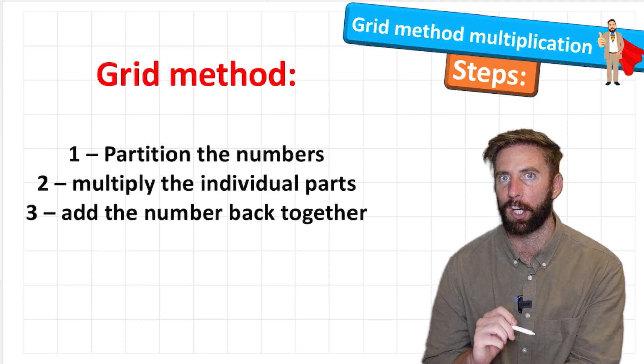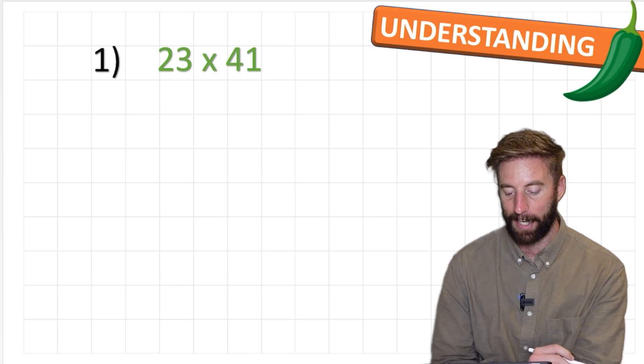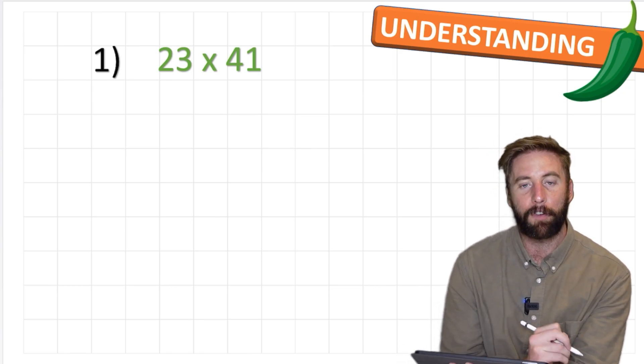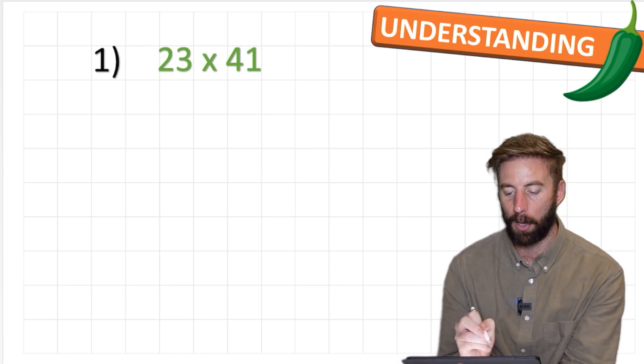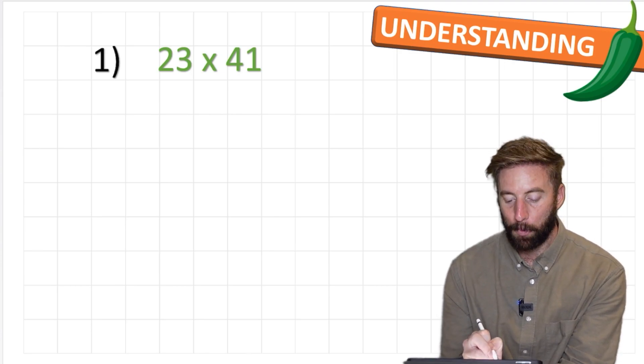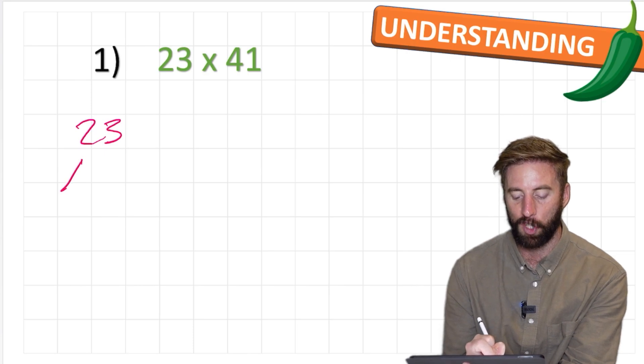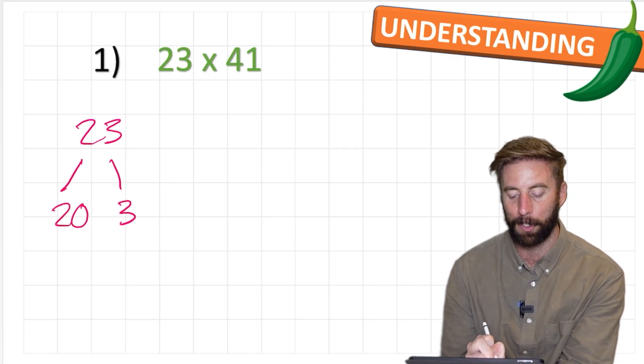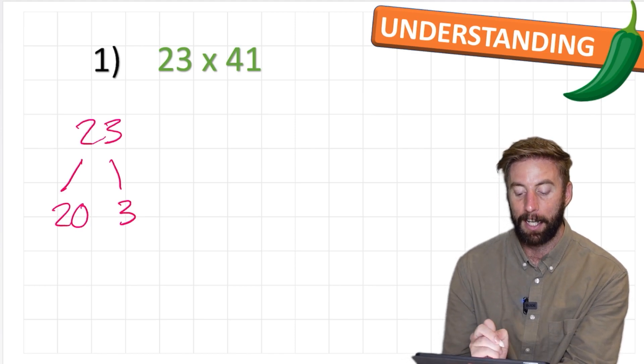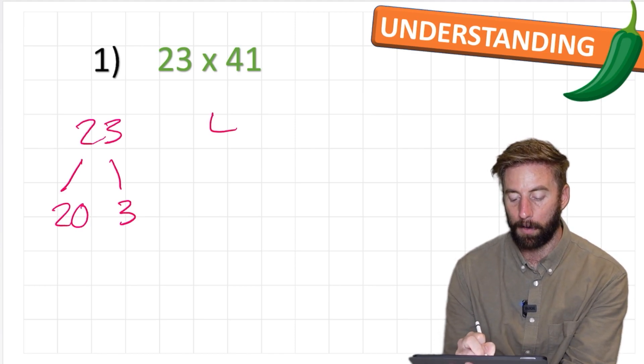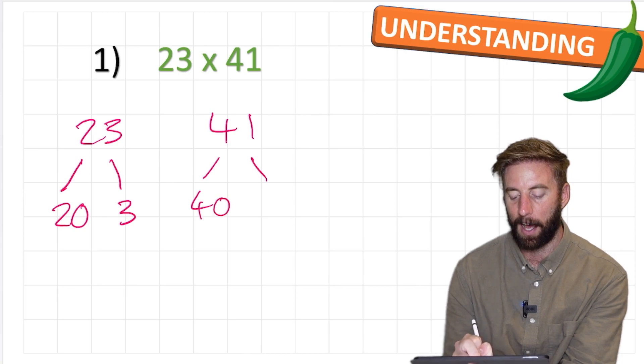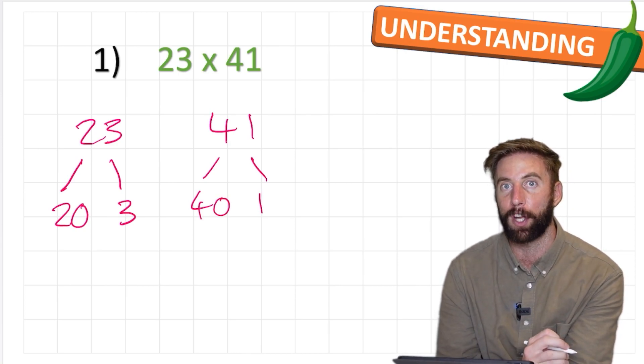So let's have a look at our green chili challenge: 23 times 41. Our first step said to partition our number. So we're going to look at the number 23 and understand that we can partition this into a 20 and a 3 because 20 plus 3 equals 23. We can do the same to 41 and it would be 40 and 1.